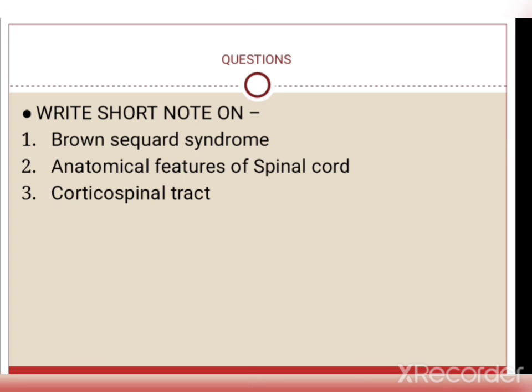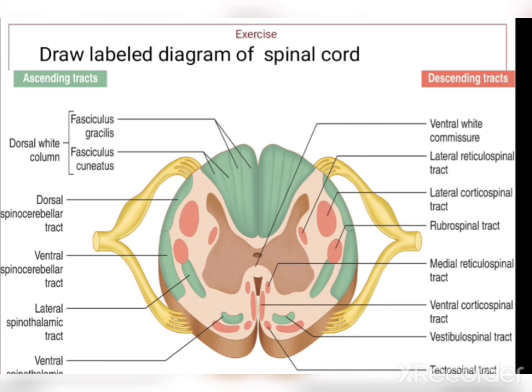Important exam questions on this topic include: Brown-Séquard syndrome (hemisection of the spinal cord and anatomical features), the corticospinal tract (detailed notes with diagram), and for your file you need to draw the transverse section of the spinal cord including all ascending and descending tracts.